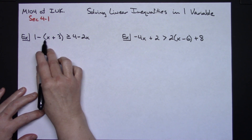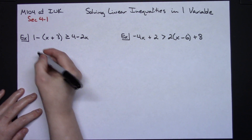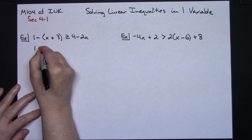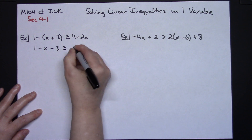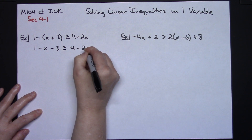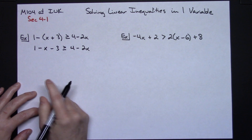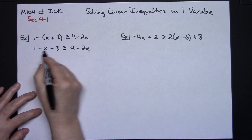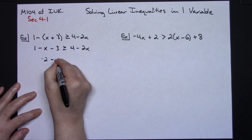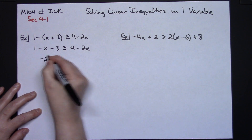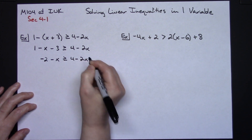I see a minus sign before that set of parentheses, so I'm going to go through and change my signs right there. So this is going to be 1 minus x minus 3, greater than or equal to 4 minus 2x. Combining some like terms on this side, 1 minus 3, I'm going to have negative 2 minus x, greater than or equal to 4 minus 2x.